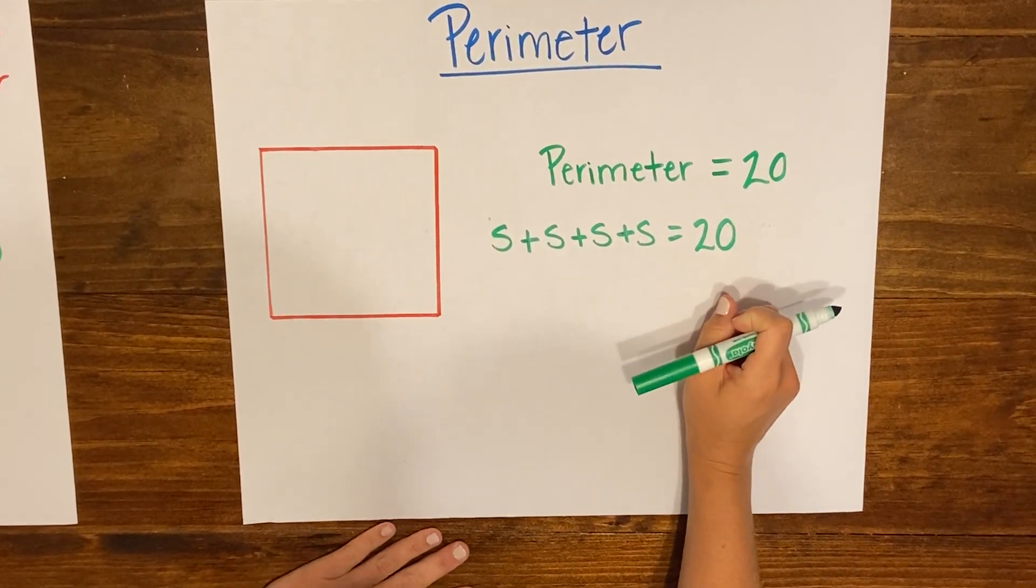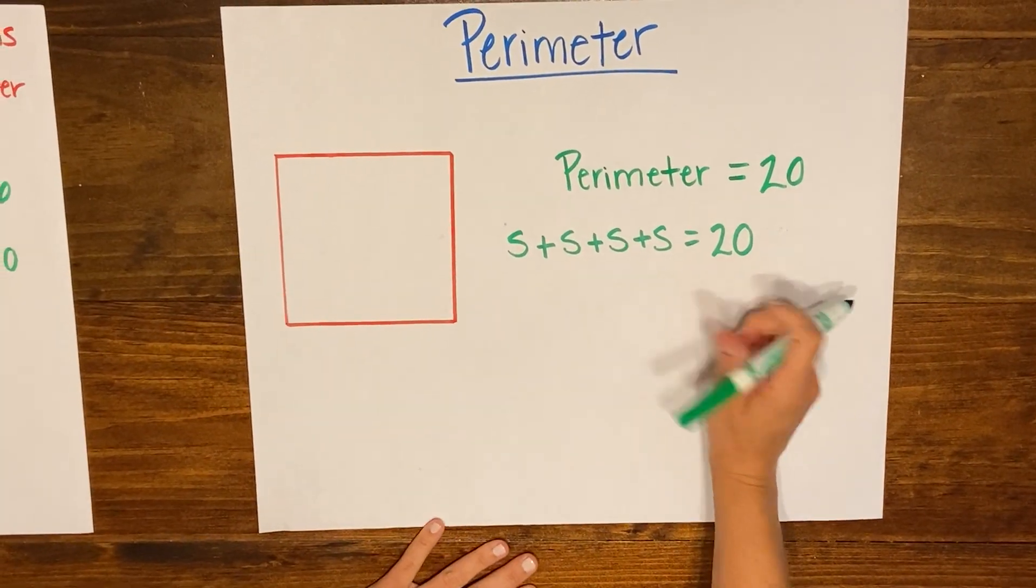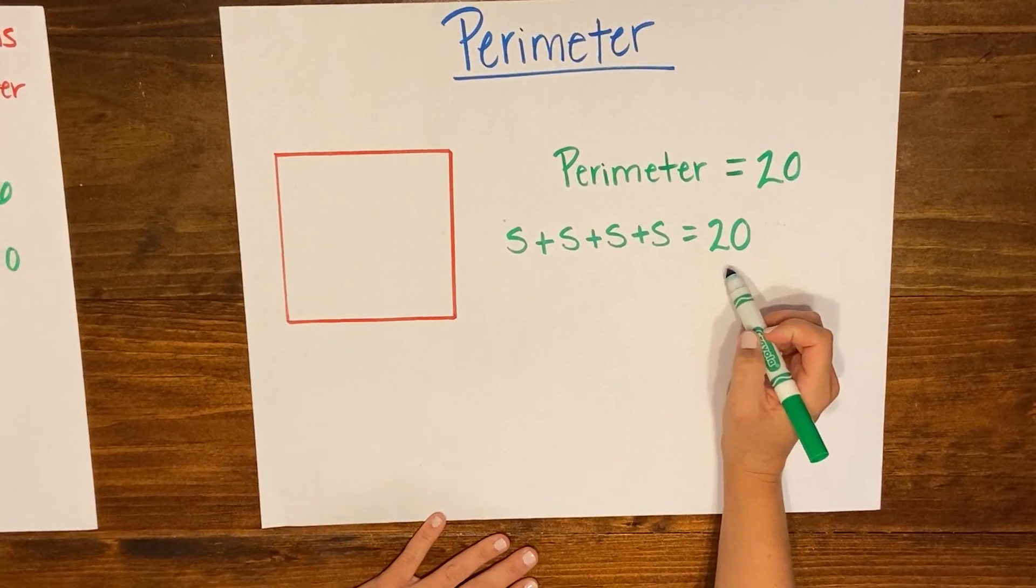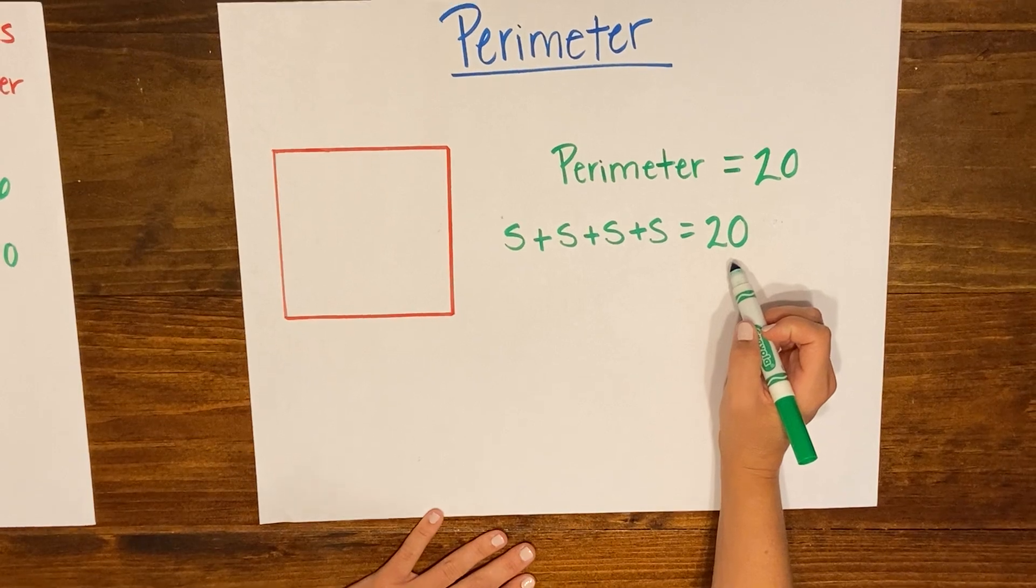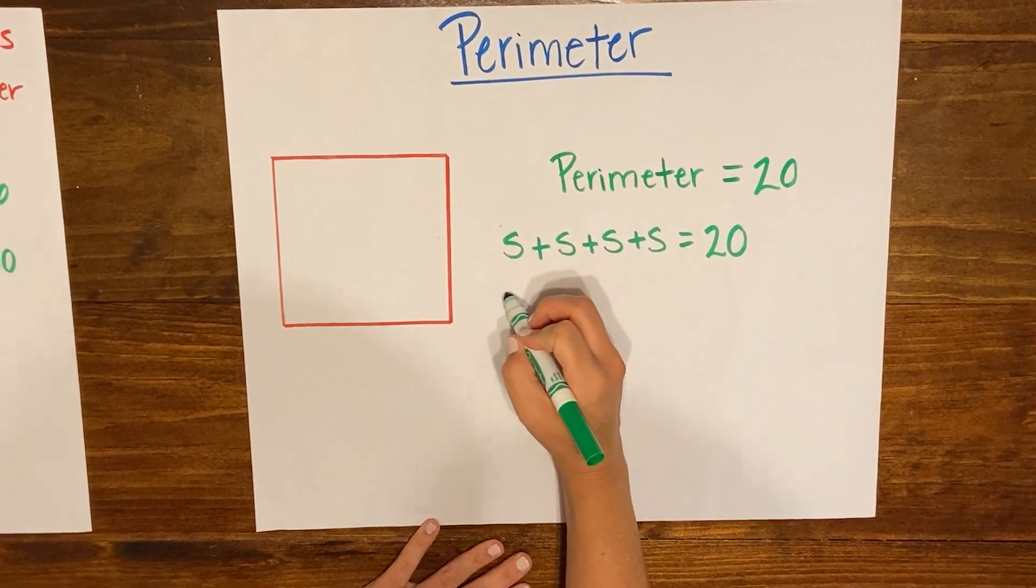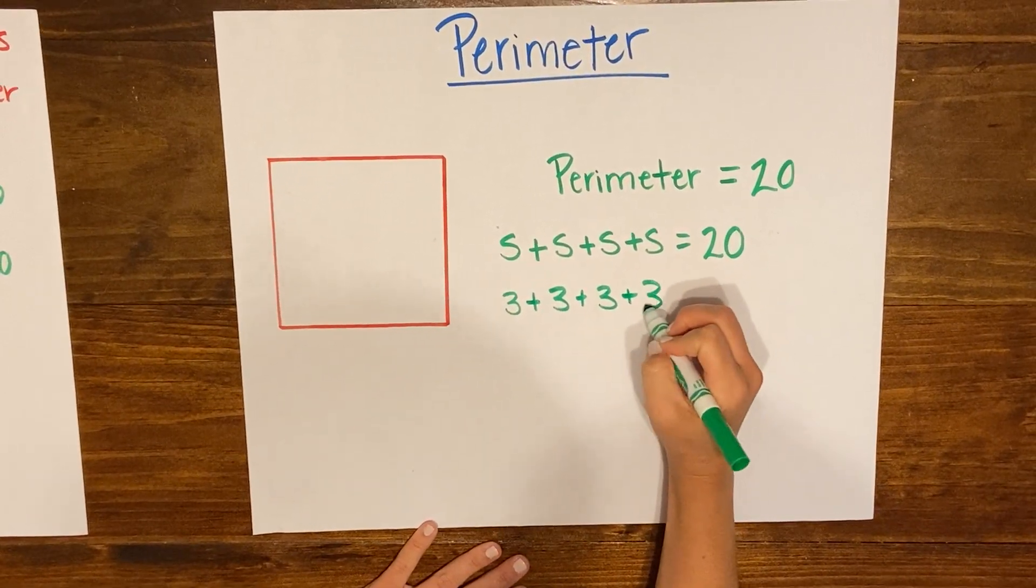So the best way to do this problem is really just to guess and check. So I know that my number here is 20 which is a pretty small number so I'm gonna go ahead and guess that maybe the sides are 3, and so if I'm thinking that the sides are 3 I'm gonna fill 3 in for S here and I'm gonna do 3 plus 3 plus 3 plus 3.